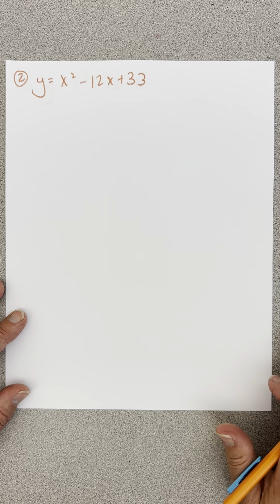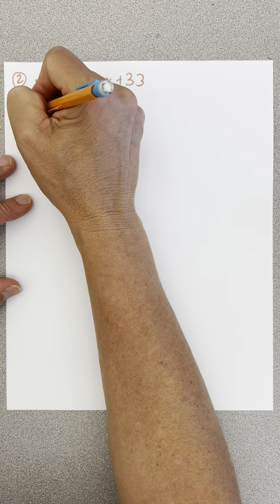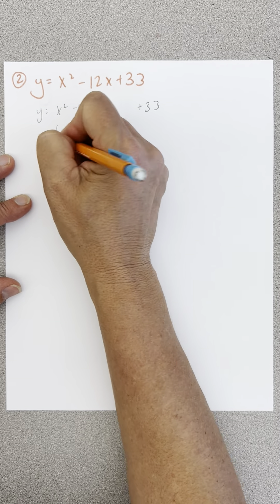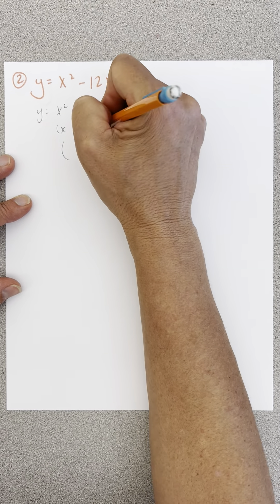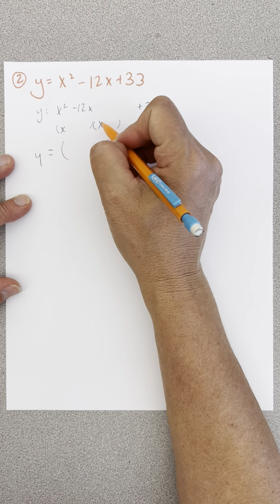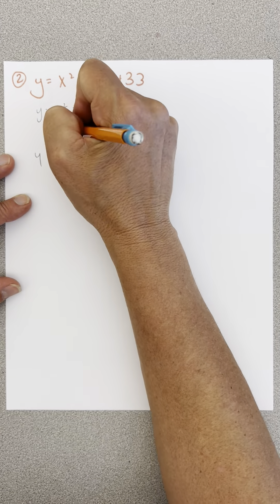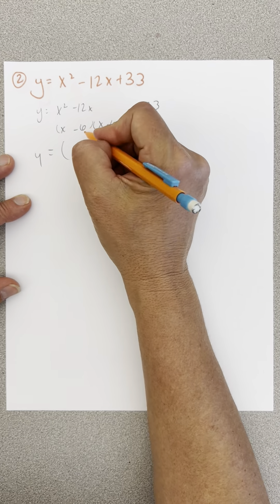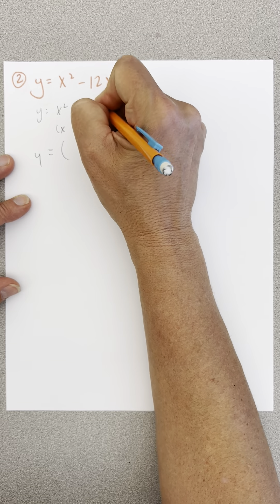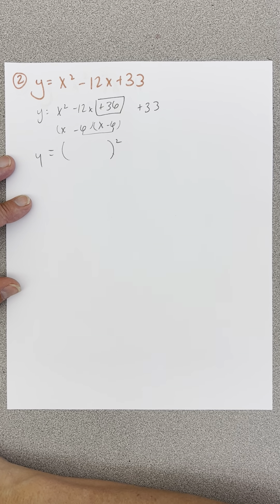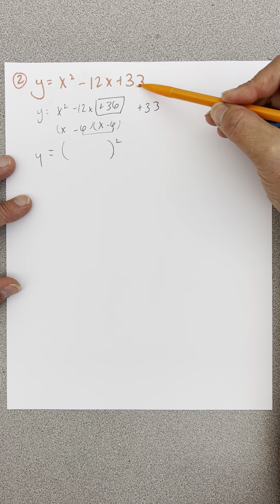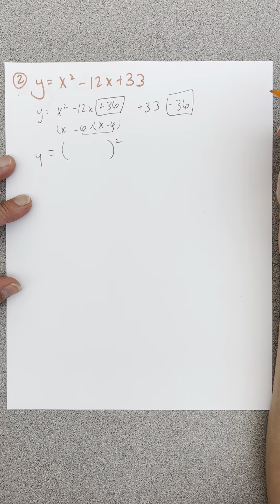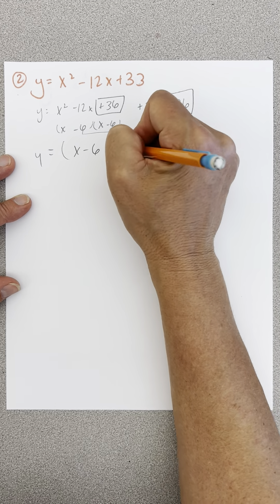Next one: y equals x squared minus 12x plus 33. Same process — y equals, take x squared minus 12x, let that sit alone, plus 33. The goal is to have something squared. x squared is x and x. To get negative 12 on the outside and inside — and it has to be the same because it's squared — we need negative 6 and negative 6. So negative 6x minus 6x gives negative 12x. To complete the square, multiply those together and add 36. Since I added 36, I subtract 36 to balance. This is x minus 6 squared, and 33 minus 36 is negative 3.